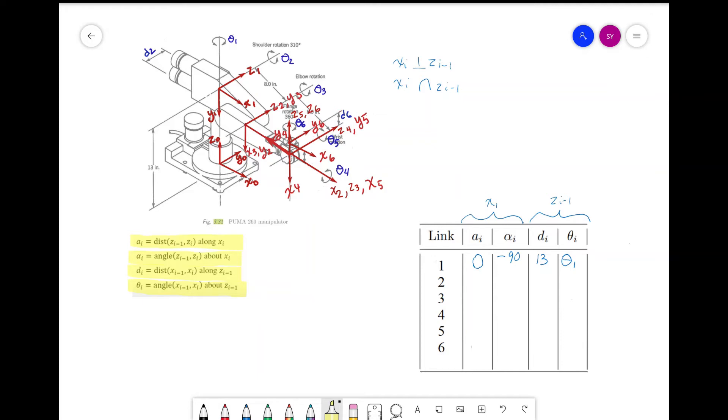Now let's look at link 2. A is the distance from z1 to z2, which we see here is 8. Then alpha is 0 as the x-axis are aligned. For d, there's a distance of d2 from x1 to x2. But since we are moving the opposite direction of z1, this is negative. So d_i is negative d2.